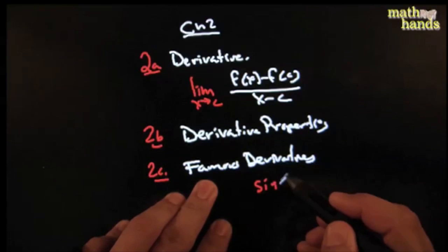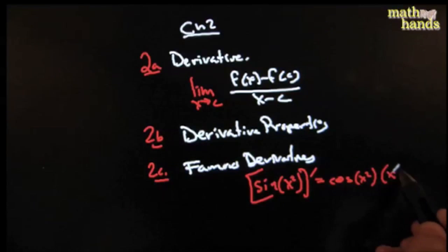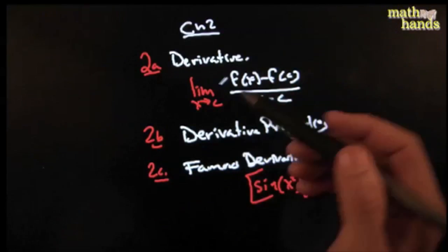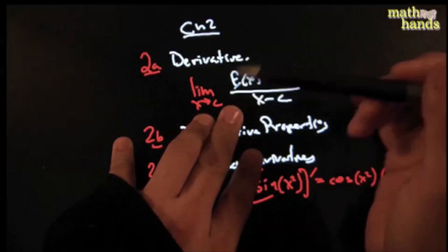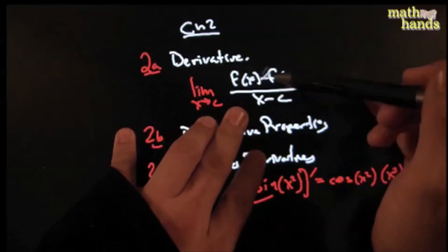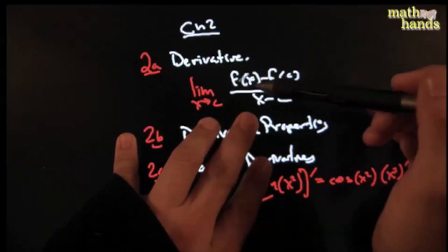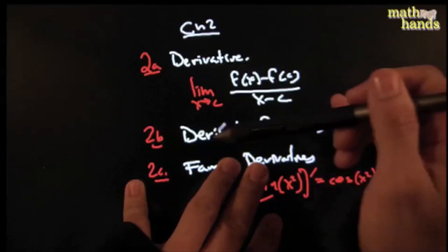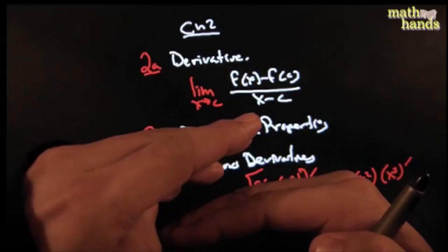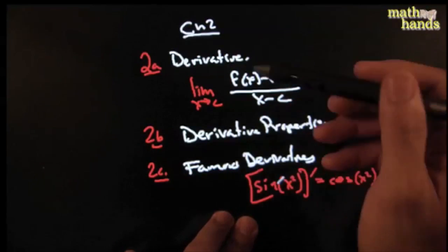Fluency in derivatives is key. There's also a famous alternative definition using h that appears in many textbooks — I delegated that to a homework assignment. Famous derivative properties: you should know them and be able to prove 95% of them. That covers the highlights from Chapter 2.